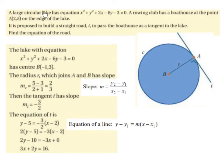A large circular lake has the equation x squared plus y squared plus 2x minus 6y minus 3 equals 0. A rowing club has a boathouse at the point A(2,5) on the edge of the lake.